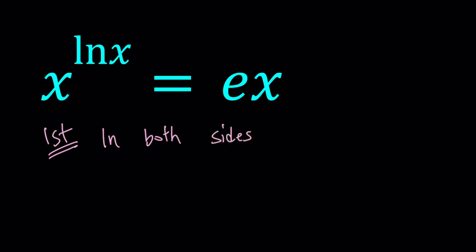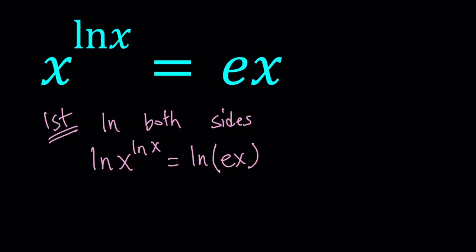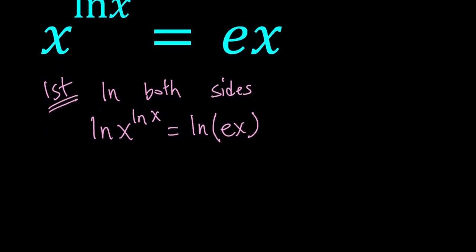When you take ln of both sides you get the following. We have ln of x to the power ln x equals ln of ex. So we're going to go through two methods and at the end I'm going to show you a graph. Graph is kind of interesting. So ln x is a power, so by using properties of logarithms we can go ahead and move it to the front. This gives us ln x times ln x equals ln of ex. We know that the logarithm of a product is the sum of the two logarithms. So this can be written as ln e plus ln x.